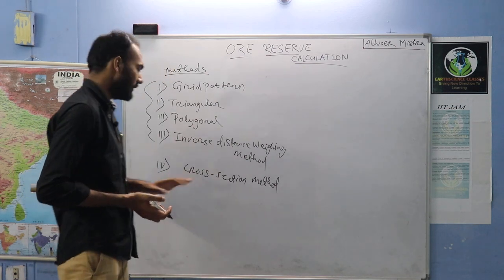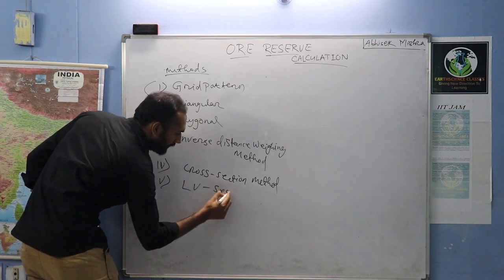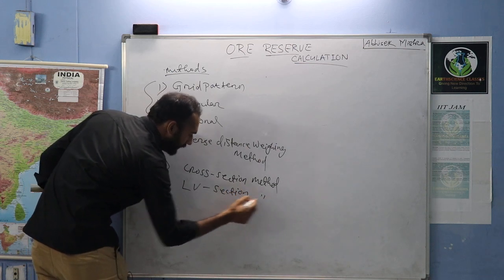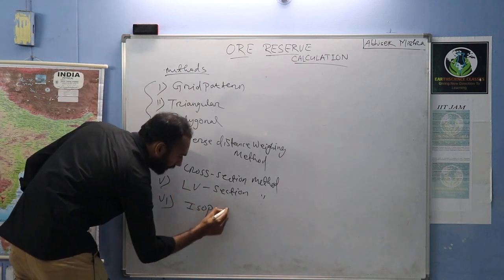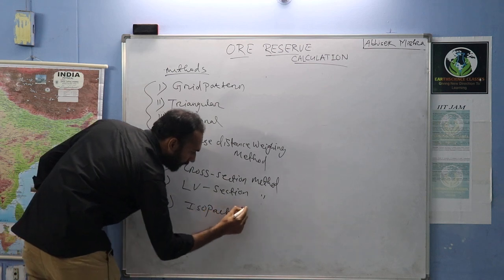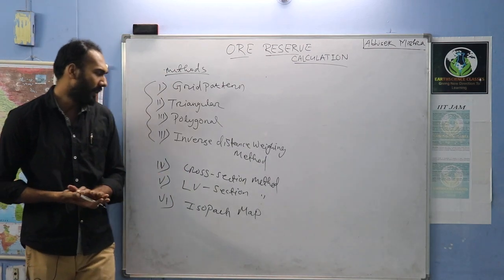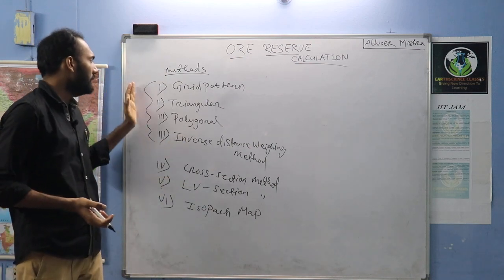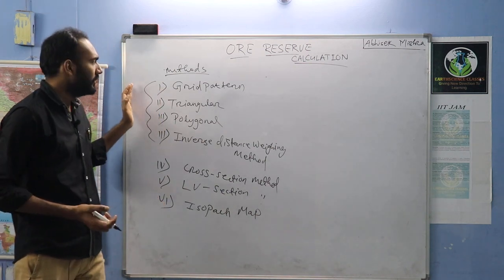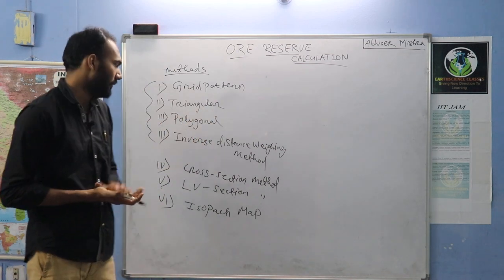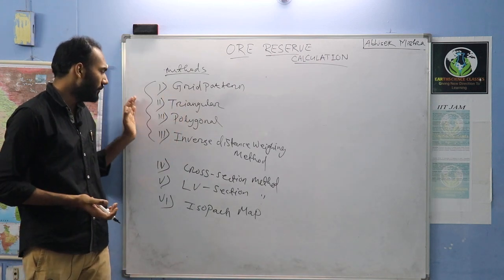Further methods like the cross-section method, LV section (longitudinal vertical section) method, and isopatch map are required for after MSc, like when you are preparing for GATE or NET. For JAM, you have to concentrate only on these four methods, and they are not asked in very detail.